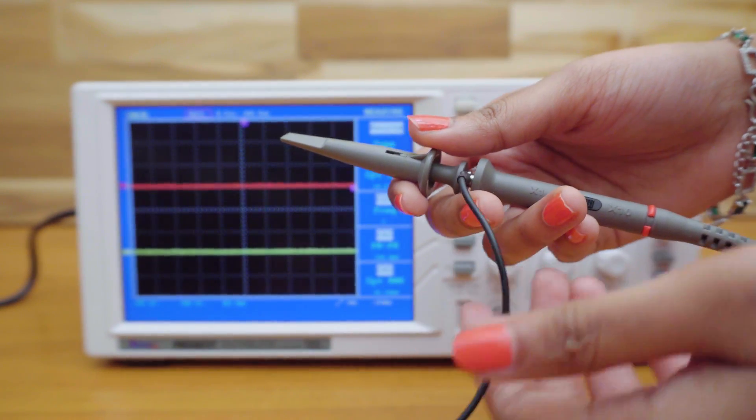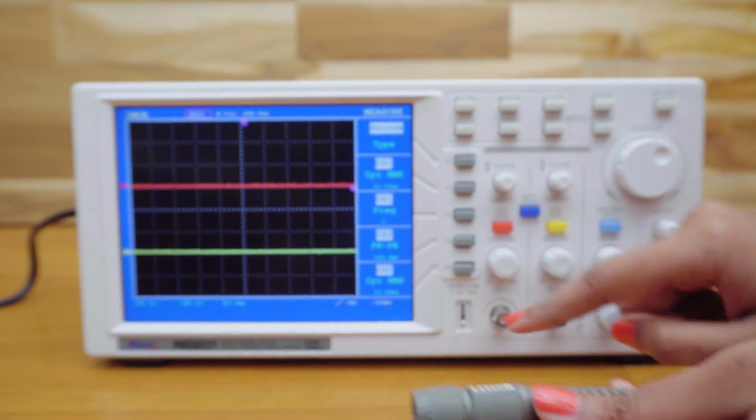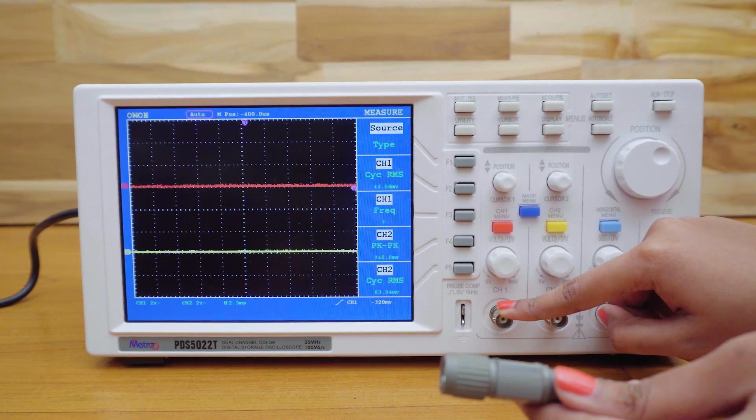But here, I'm using it in 10x mode. This is the other end of the probe and this connector goes to the channel 1 of the oscilloscope. Let me just connect it here.